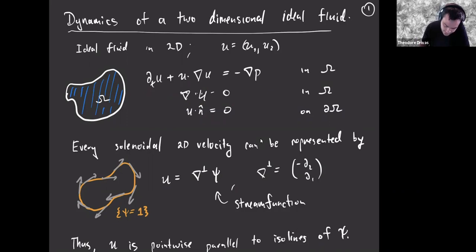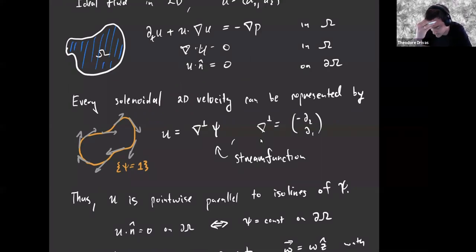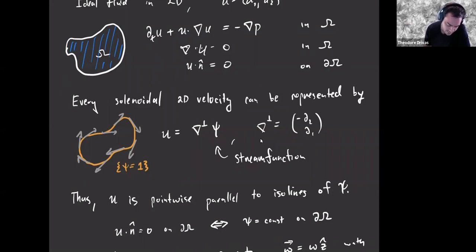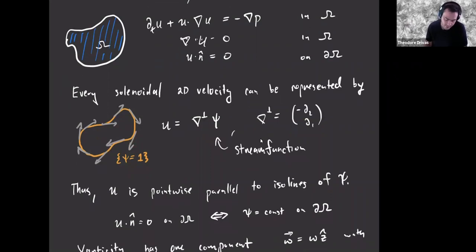In two dimensions, there's a simplification: you can have a scalar function C, called the stream function, and the velocity can be written as the perpendicular gradient of this stream function — rotate the gradient counterclockwise 90 degrees. It's called the stream function because level sets of this function are streamlines of the velocity. The fact that the velocity is tangent to the boundary is therefore just the statement that the stream function is constant on the boundary of the domain.